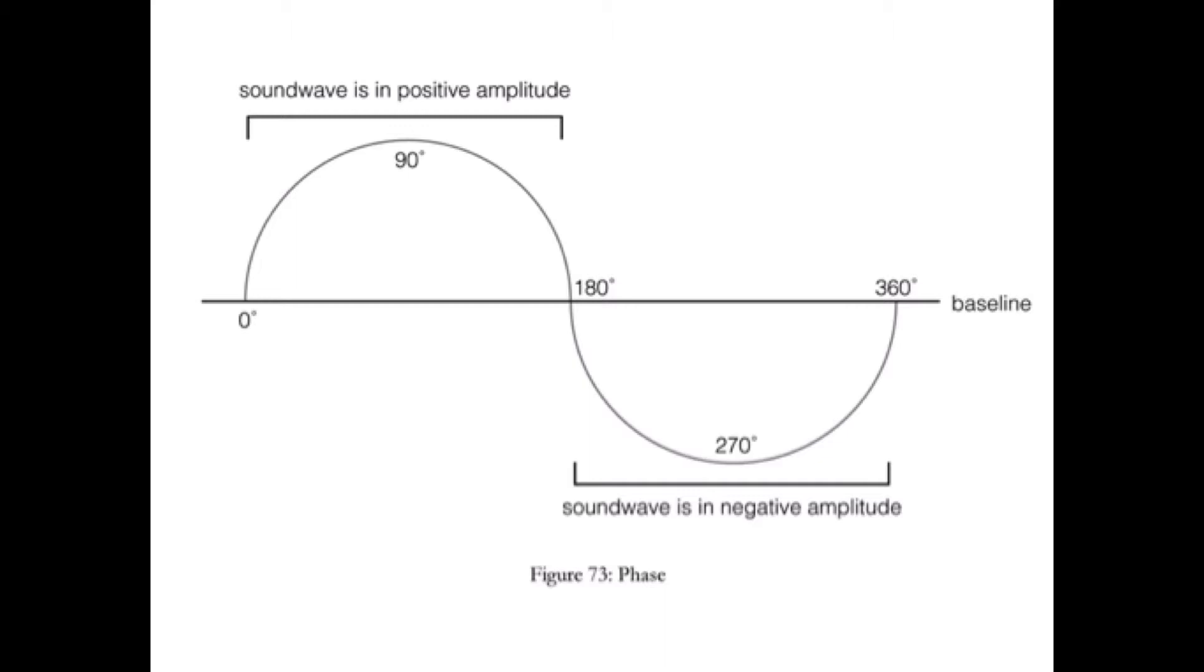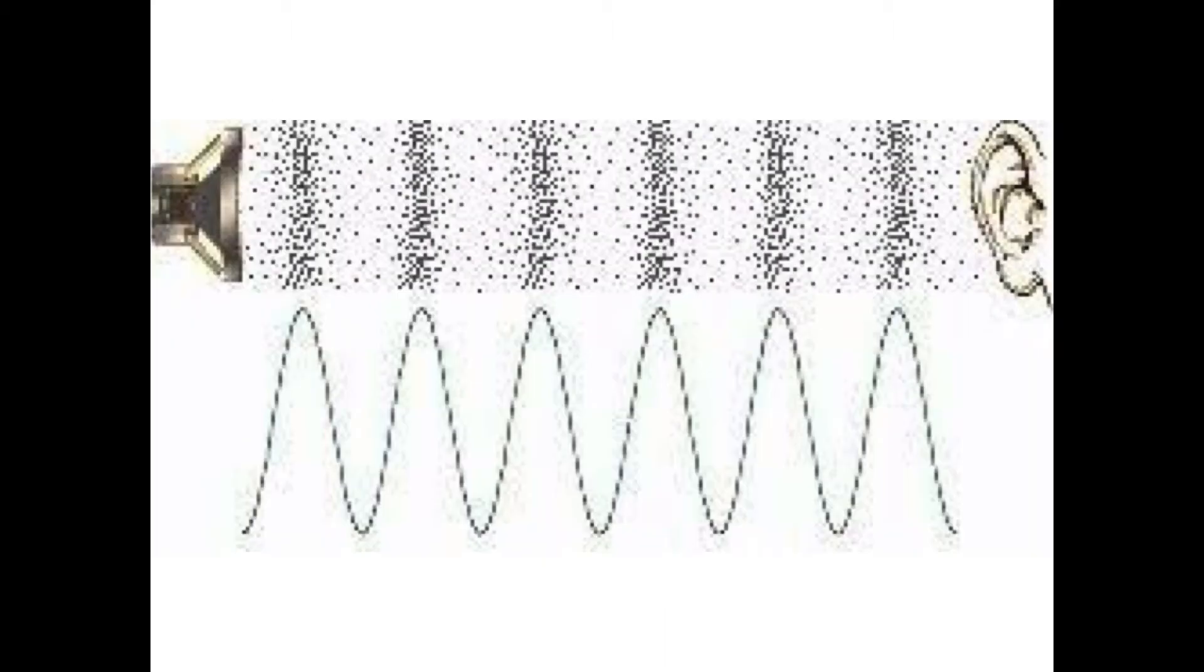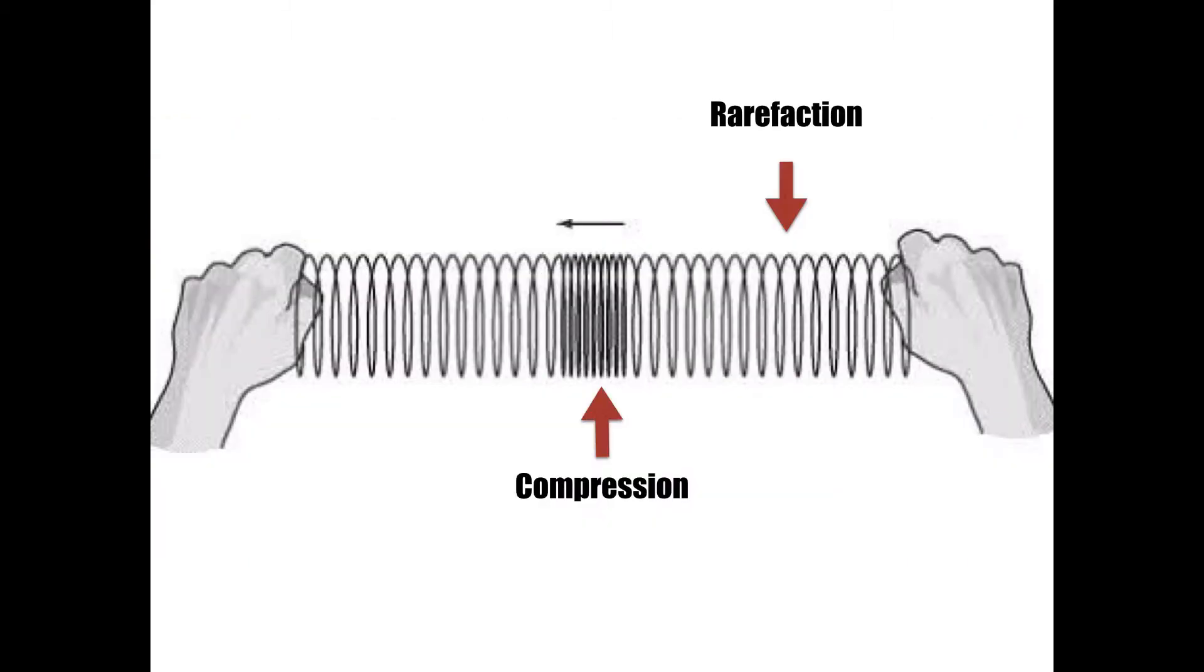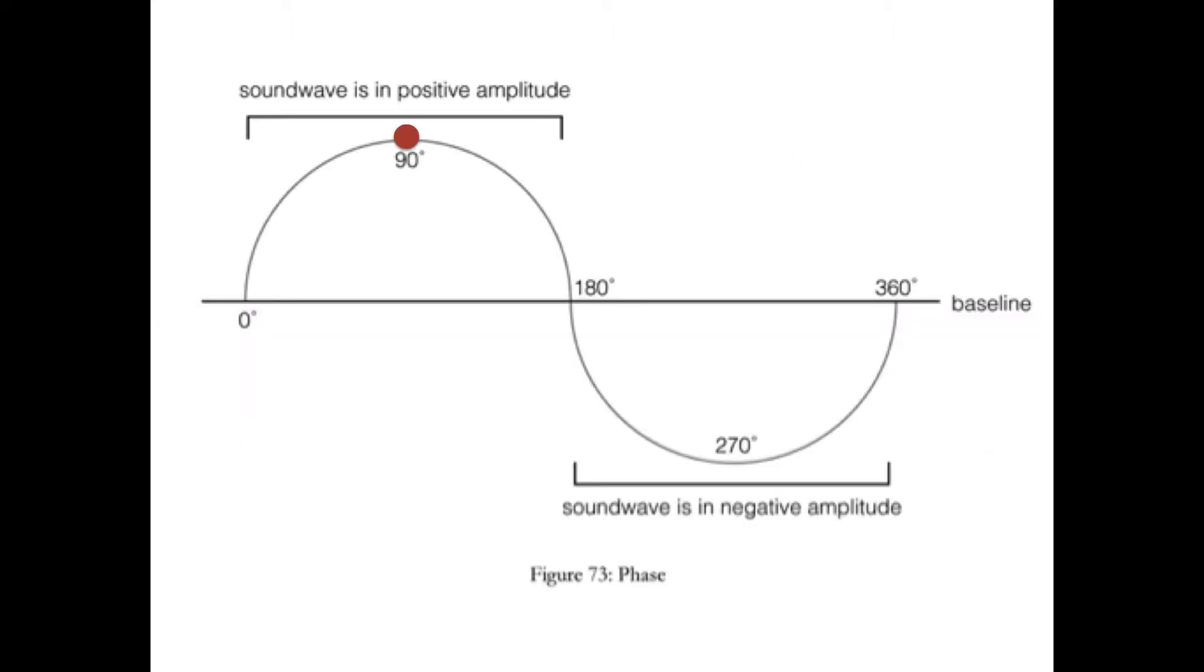First off, to explain what phase is, you need to understand something about the nature of sound. Sound is cyclical. It's a physical phenomenon, a cycle of compressing and rarefacting molecules. The best way to think of sound is to think of a slinky, as it condenses, which is known as compression, and then stretches, rarefaction. Phase is used to measure where in the cyclical process the sound wave is at a given point in time.